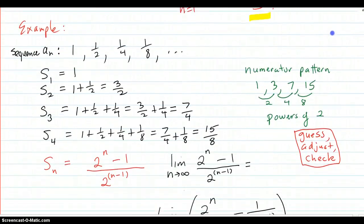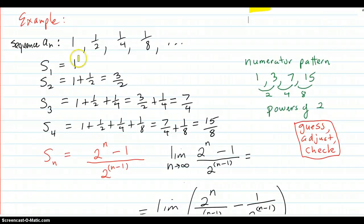So here's your example. The sequence terms are a list of terms. The partial sums, S sub one, is the sum of the first one. Well, the first one is just one. So that's one. S_2 is the sum of the first two: one plus one half, which is three halves. S_3 is the sum of the first three, like this, and that adds up to seven fourths. And the sum of the first four terms equals all this equals fifteen eighths.